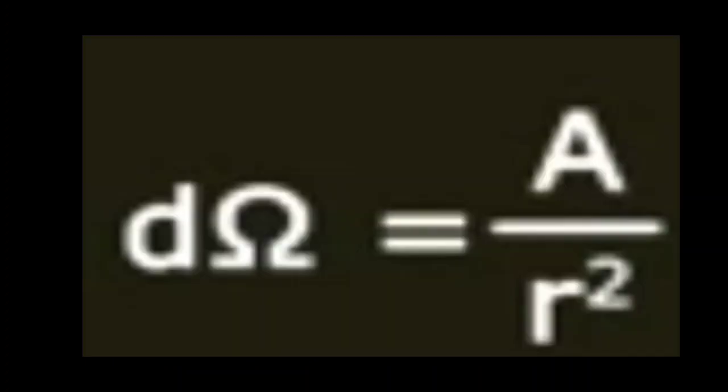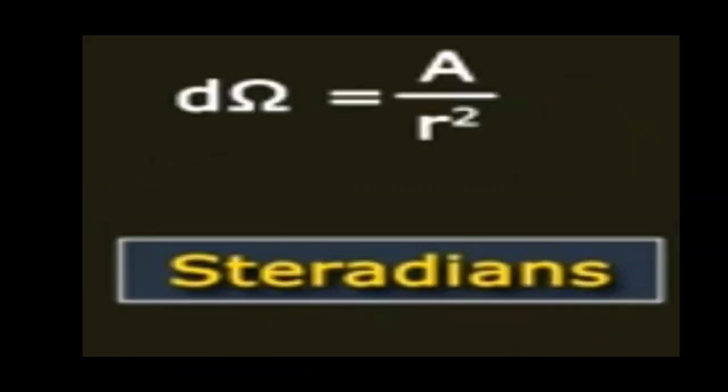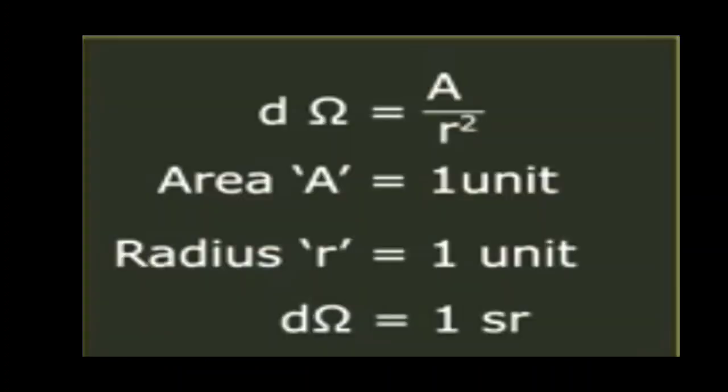Solid angle is denoted by the Greek letter omega and is given by the formula dΩ equals A by r², where A is area and r² is radius squared. The SI unit of area is meter squared and of radius is meter, so r² is meter squared. Both cancel, making solid angle also a dimensionless quantity. The SI unit of solid angle is steradian, abbreviated as sr. A steradian is defined as the solid angle subtended at the center of a unit sphere by a unit area on its surface.